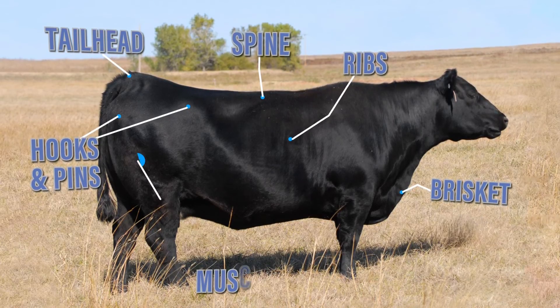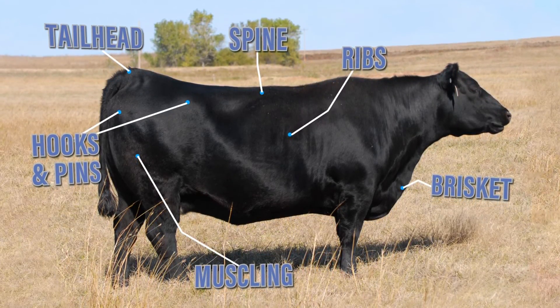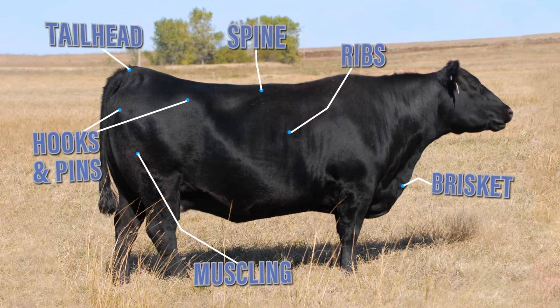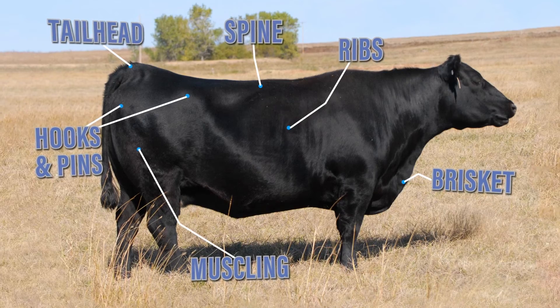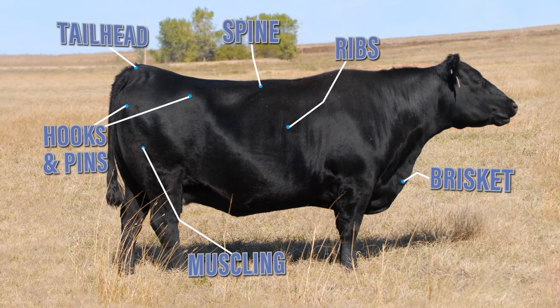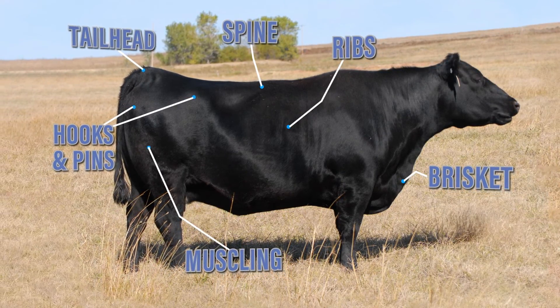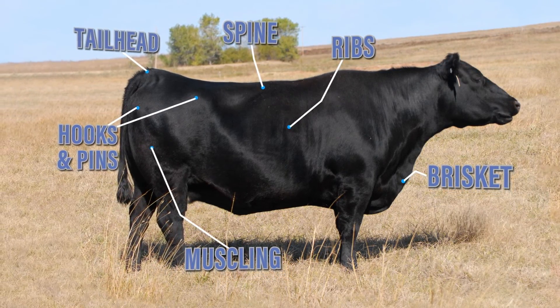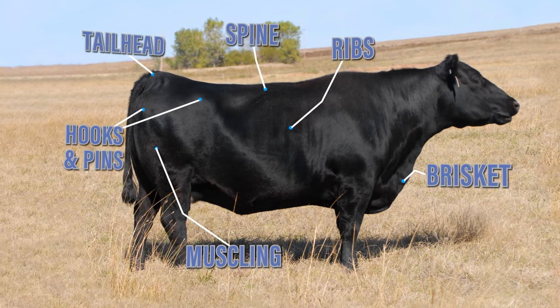Finally, muscling is assessed to determine if there is atrophy of the muscle, no muscle present, or if the animal has full muscling. When looking at muscle versus fat, remember that muscle will have tone, while fat will have a smooth appearance.